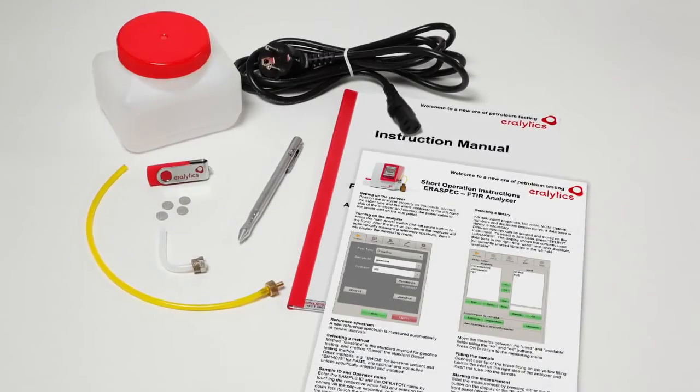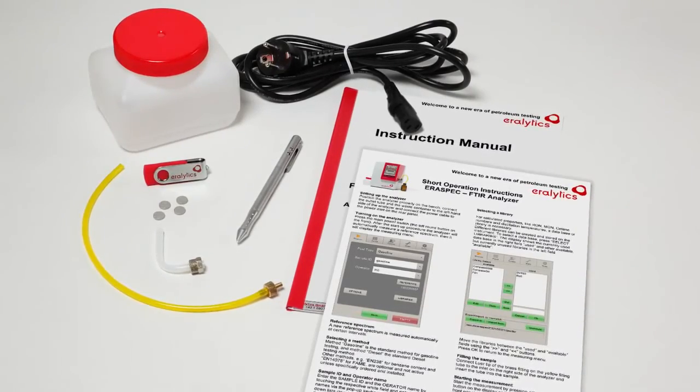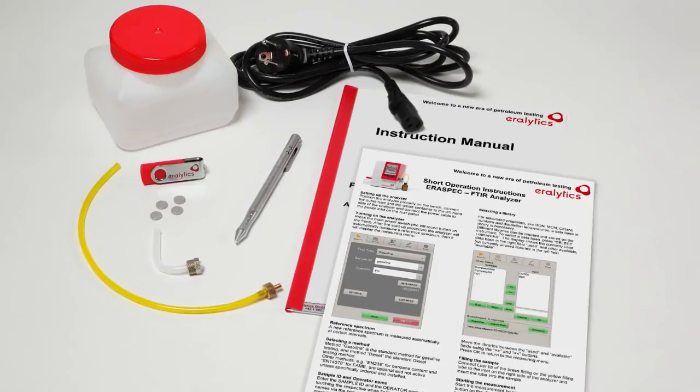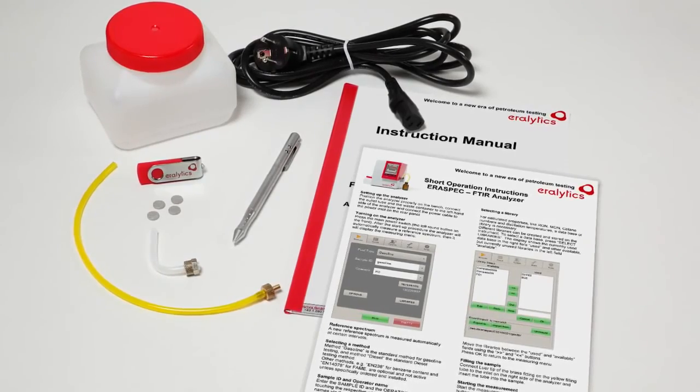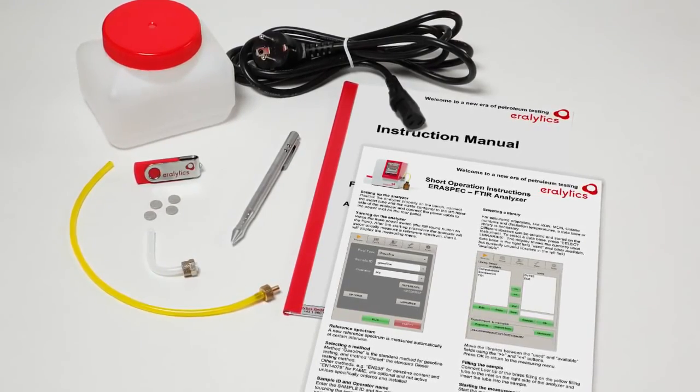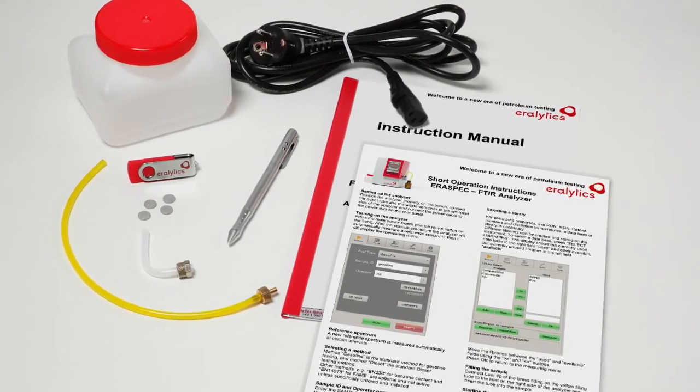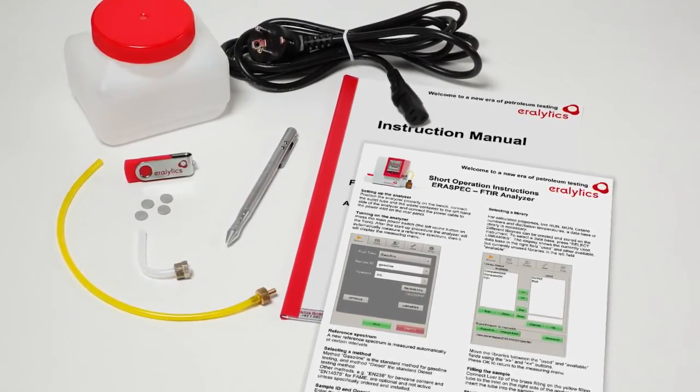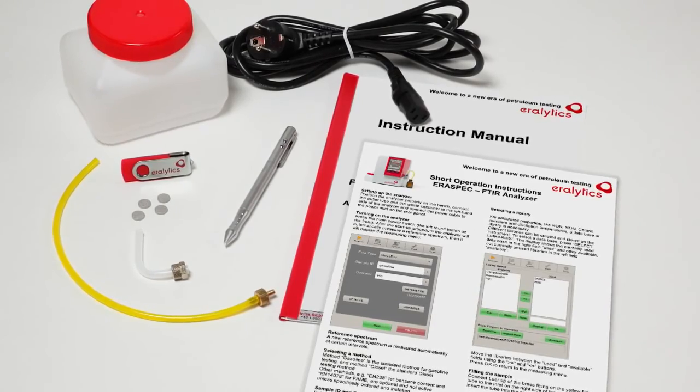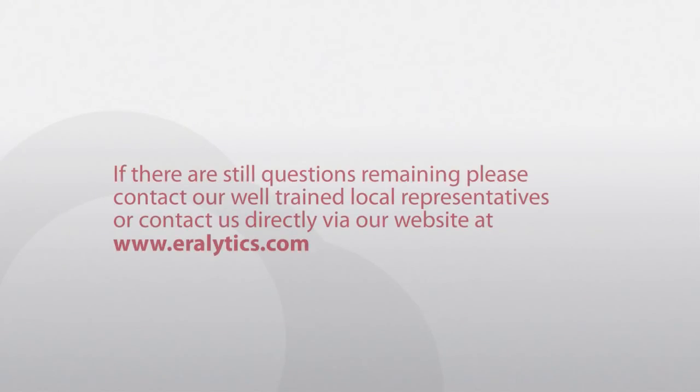Please make sure to carefully read the instruction manual before you start with the first measurements. The manual is available as a PDF file on the delivered USB flash drive. Additionally, you will find a one-page laminated short instruction inside the accessories box. If there are still questions remaining, please contact our well-trained local representatives or contact us directly via our website at aerolitics.com.